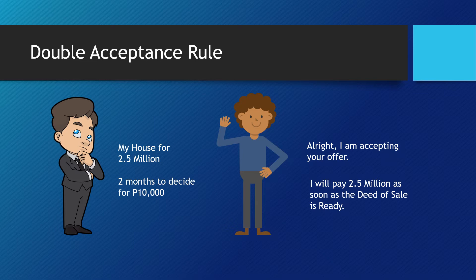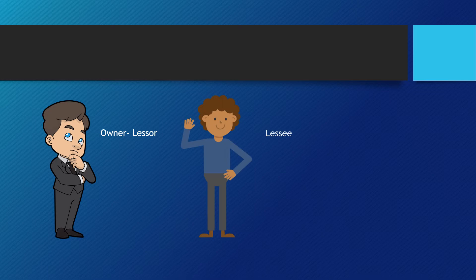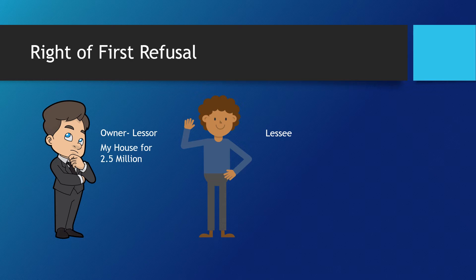Note that an option not exercised within the period is extinguished. A right of first refusal means that should John, as the owner-lessor, decide to sell the property during the term of the lease, such sale should first be offered to Mark, the lessee. The series of negotiations that transpire between them on the basis of such preference is already a compliance even when no final purchase agreement is perfected between them. Thereafter, John is at liberty to offer the sale to a third party.